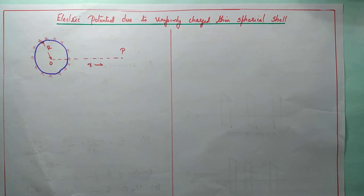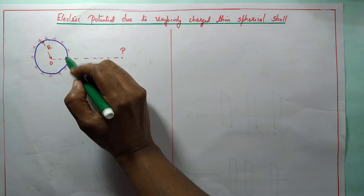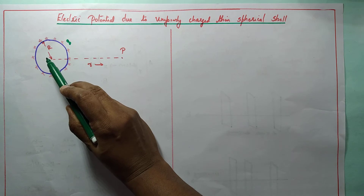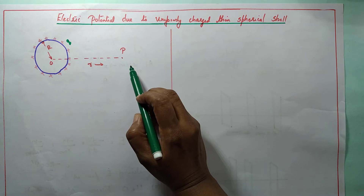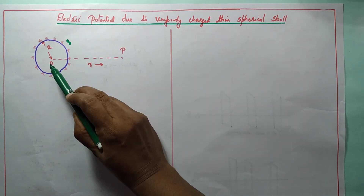In Gauss's Theorem, in the last chapter, we studied the electric field due to a thin spherical shell. Here we study electric potential due to a thin spherical shell. Consider a thin spherical shell with charges Q uniformly distributed on its surface, and R as the radius. P is a point at distance r from the center. We have to find the electric potential at three points: first, outside the shell; second, on the surface of the shell; and third, inside the shell.